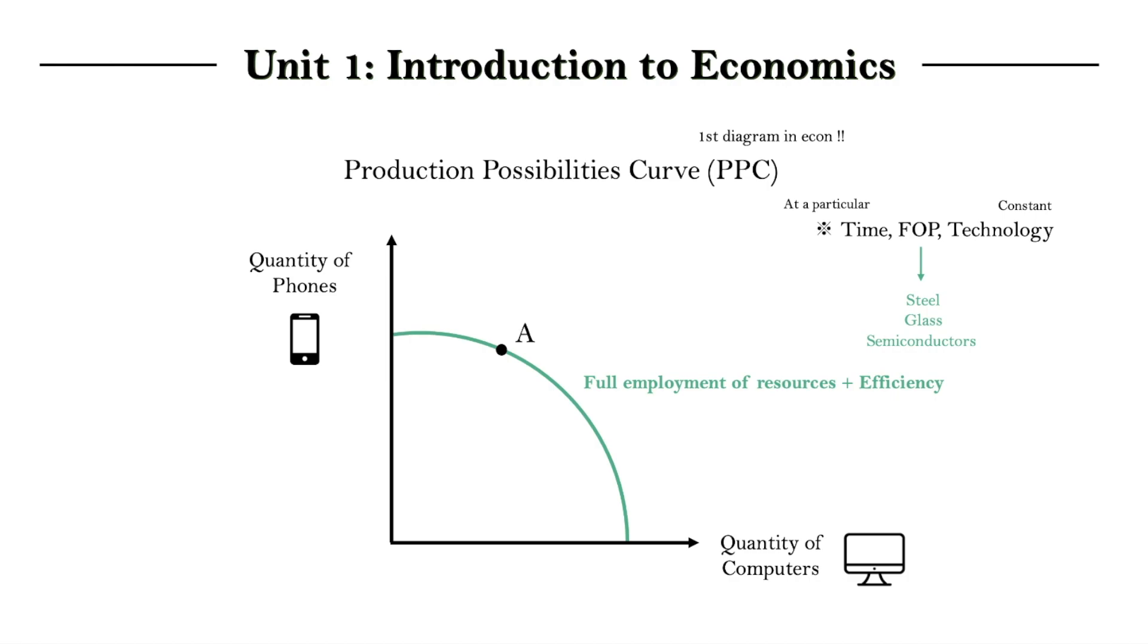Which means that we're using all the resources we have, full employment of resources, and that we're using them efficiently, where we're producing as much goods as we can with the resources we have. And let's say, for example, at point A, we're efficiently using all resources to make 40 phones and 20 computers. And that is just one way of distributing resources between the two goods.